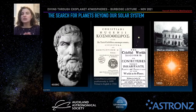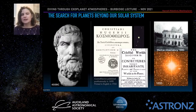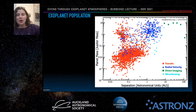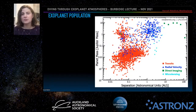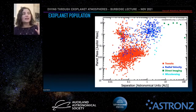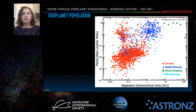The first exoplanet was discovered and confirmed in 1995, orbiting a Sun-like star. Since then, we've seen a huge number of planets discovered. This is even an old figure from 2018 — it's now 2021 and there are thousands more. We are discovering more and more planets every single week. The colours in this diagram show the different methods used to discover these worlds. I'll take us through just one of these methods: the transit method.